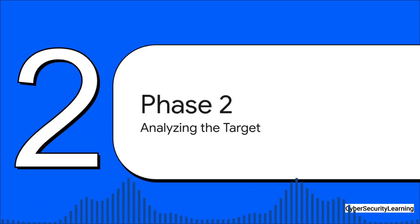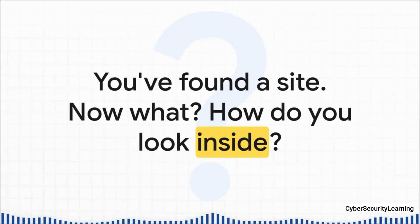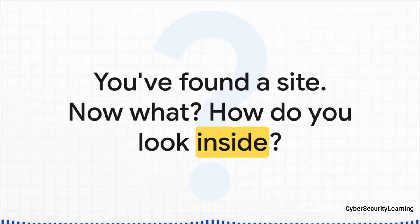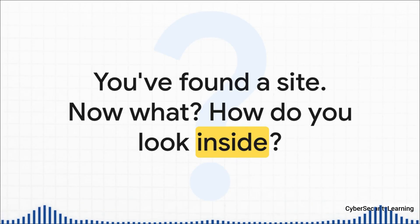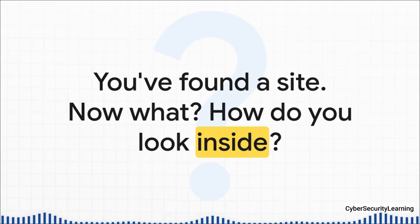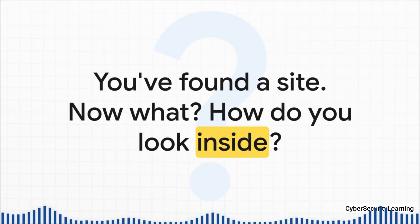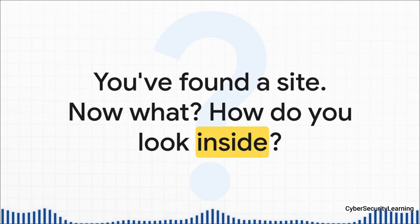Once you've used a search engine and found a site that looks interesting, the initial recon phase is over and the real analysis begins. Having a .onion address is one thing, but understanding what's under the hood — how the server is set up, what its weaknesses are, what secrets it might be hiding — that's a whole different ballgame. How do you perform a technical audit on a hidden service?